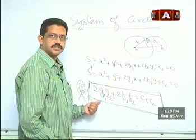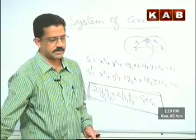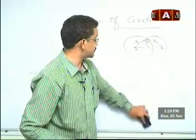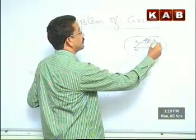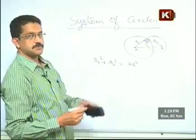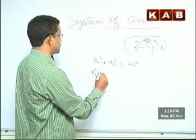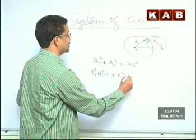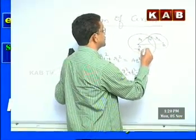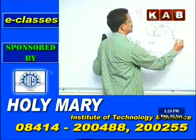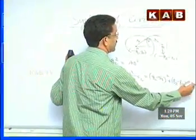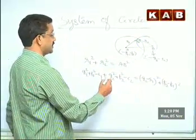When the angle between the two circles is 90 degrees, we apply the Pythagoras theorem: R1² + R2² = AB², since AB is the hypotenuse. Here R1² = G1² + F1² - C1 and R2² = G2² + F2² - C2. The distance AB² between centers (-G1, -F1) and (-G2, -F2) is (G2 - G1)² + (F2 - F1)².